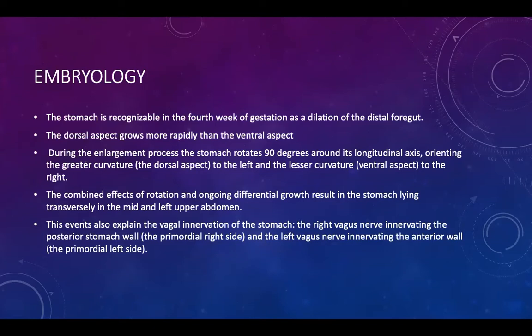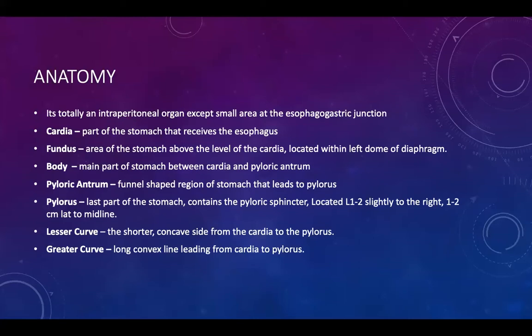This embryological event also explains how the vagal innervation changed: the vagal nerves were originally right and left in the chest, but become anterior and posterior in the abdomen because of this rotation and differential growth. Anatomically, the stomach is a totally intraperitoneal organ, except for a small area at the gastric junction, and is composed of the cardia, fundus, body, pyloric antrum, and pylorus, as well as the lesser and greater curves.